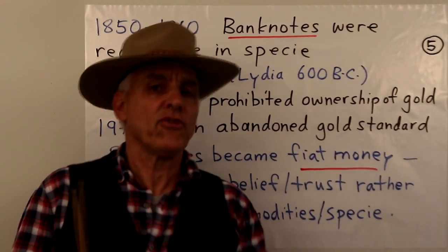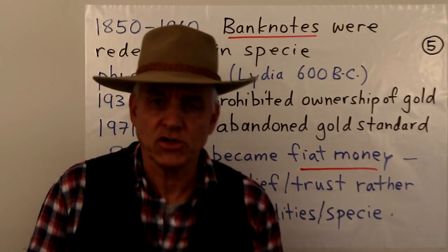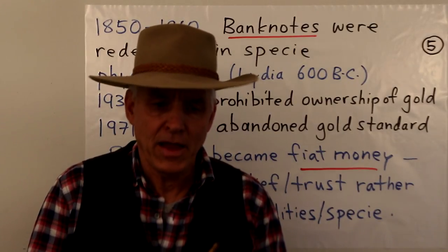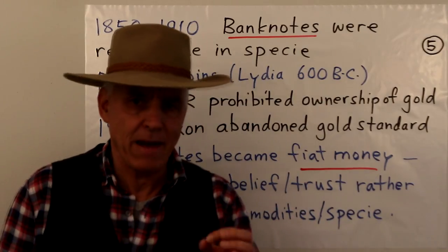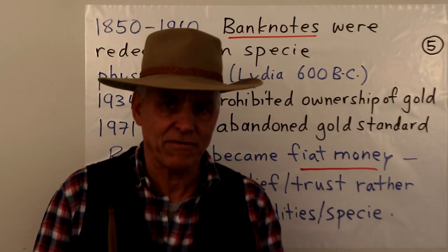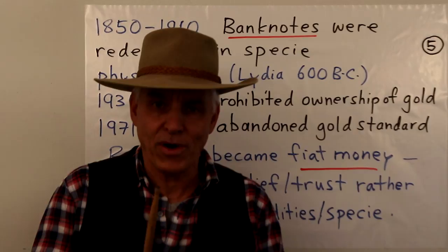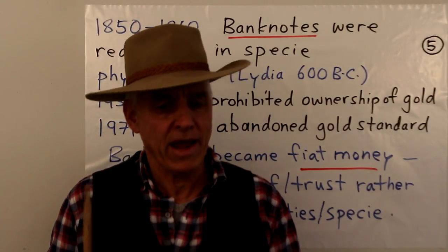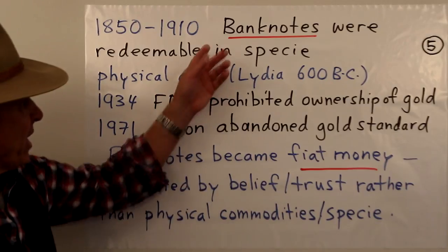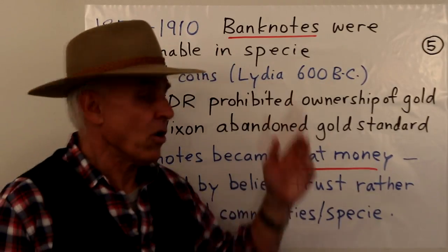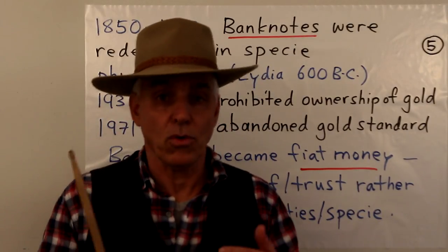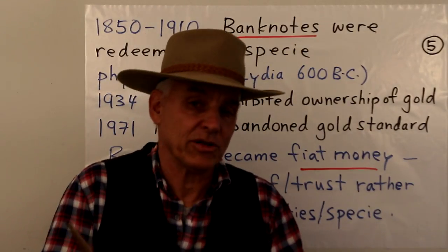What about the banknote side of things? That was definitely secondary, although there were advantages: banknotes were easier to carry, you didn't have to constantly weigh them to assess value, and they were less susceptible to tampering — with metals you could dilute them or shave off bits of coins. Banknotes had the issue of counterfeiting, but around 1850 to about 1910 they were pretty well redeemable in specie. At least officially, you could go to the bank and collect your gold or silver for your banknotes — and that's what gave banknotes ultimately their value.